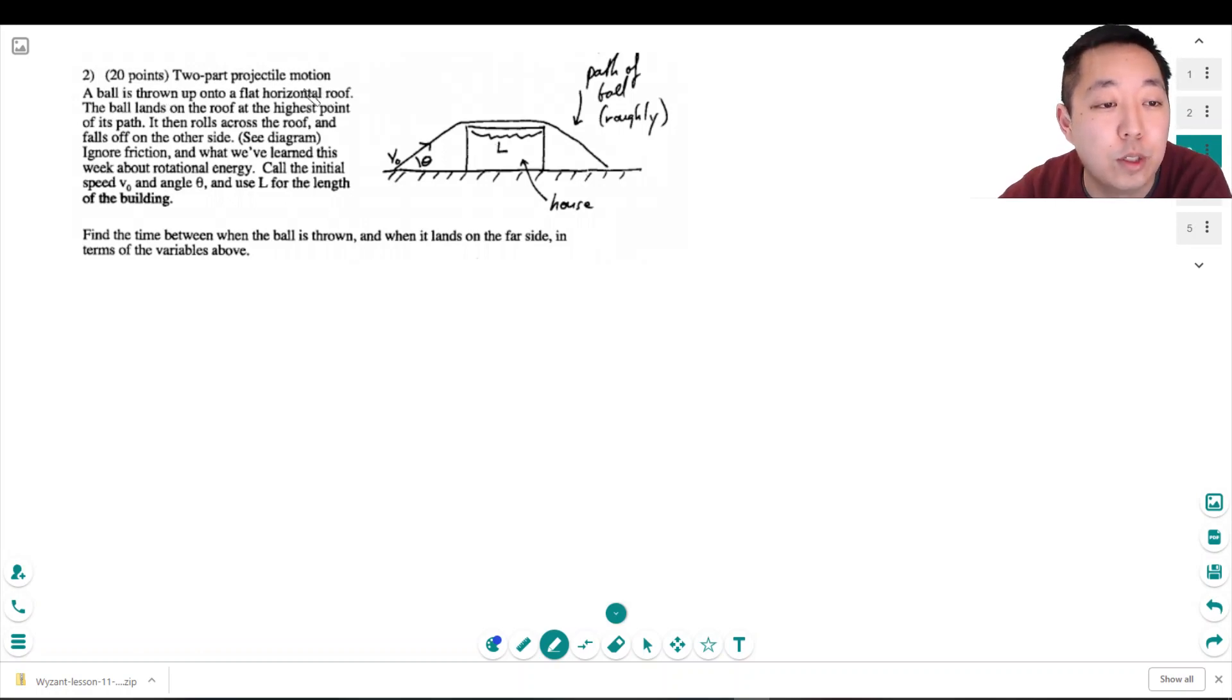So this is a two part projectile motion. A ball is thrown up onto a flat horizontal roof. The ball lands on the roof at the highest point of its path, then rolls across the roof and falls off the other side. Ignore friction and what we've learned about rotational energy. Call the initial speed V0 and the angle theta and use L for the length of the building. Find the time between when the ball is thrown and when it lands on the far side in terms of the variables above.